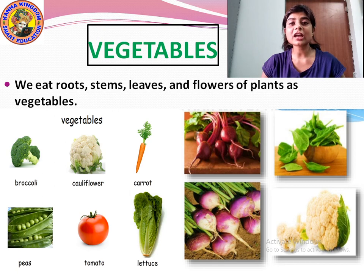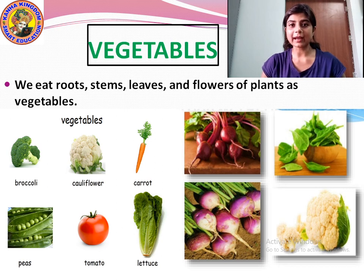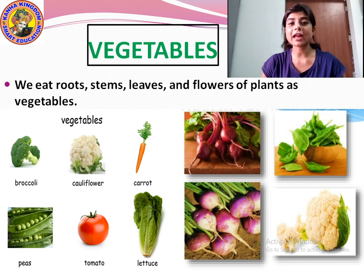Tomato is the fruit part of the plant that we eat as vegetable. So there are different parts of the plant that we eat as vegetables — roots, stem, flowers, leaves, etc. In the last class I already explained about the root and showed you the pictures.